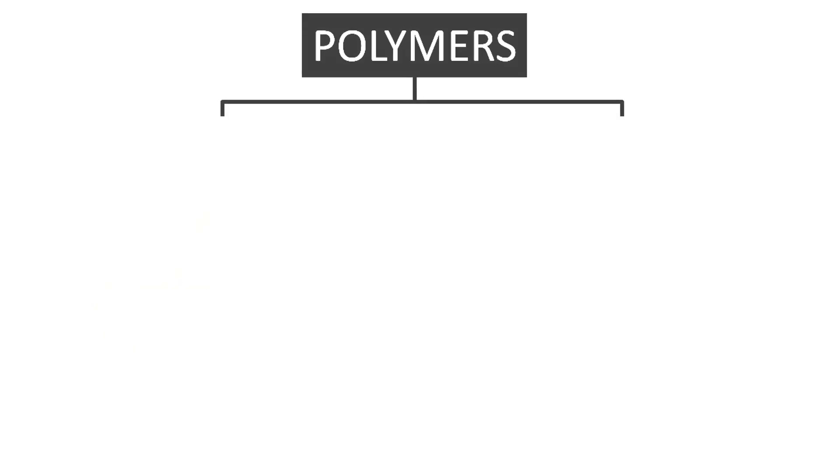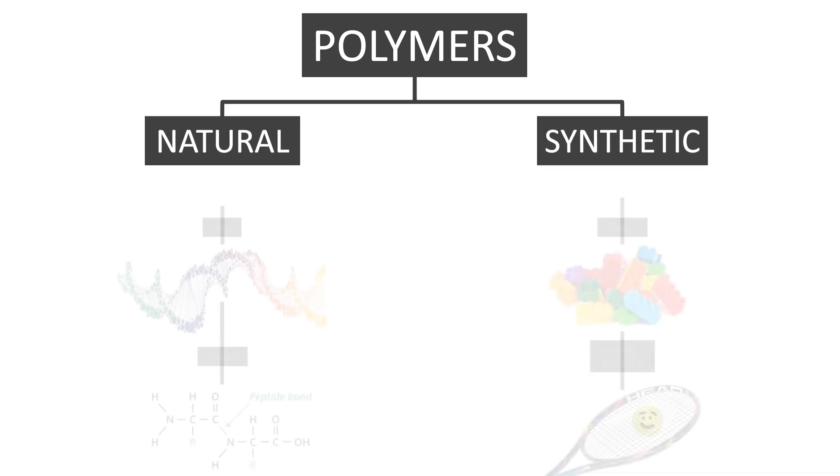Polymers, also known as macromolecules, can be divided into two groups: natural polymers, polymers found in nature, for example DNA and proteins.